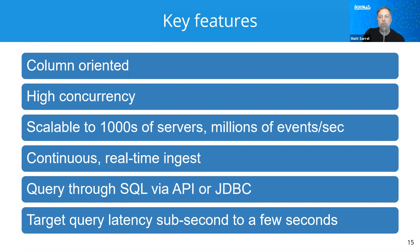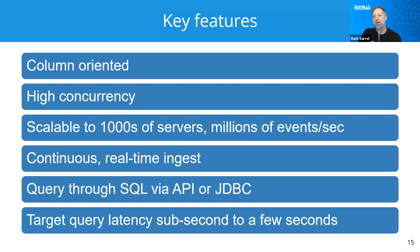Another thing Druid does is use approximate algorithms — things like approximate count distinct and approximate ranking — and it can do these things on the fly. It can also compute approximate histograms and quantiles. This is actually really good on streaming data as well.